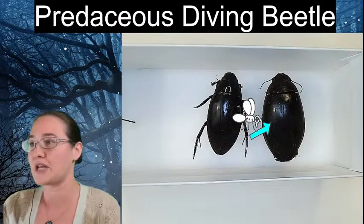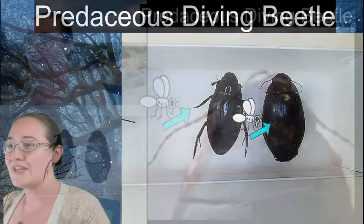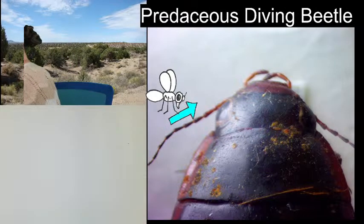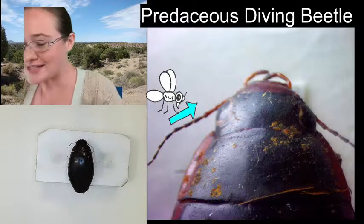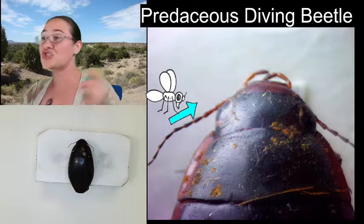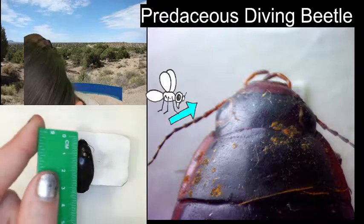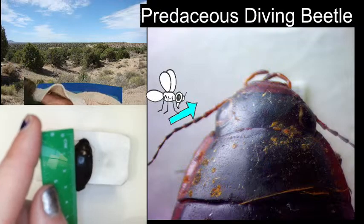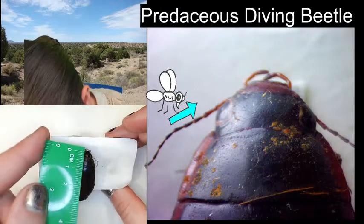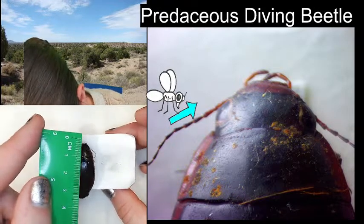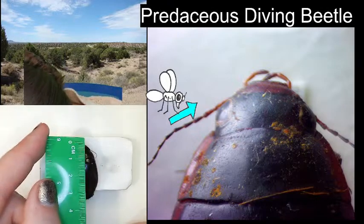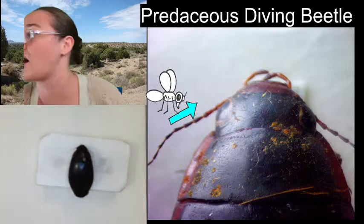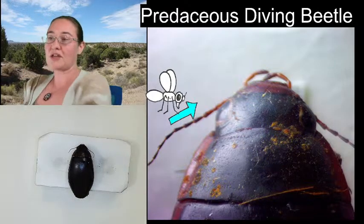I'm going to pull this predacious diving beetle over. Let me flip him over to where he's supposed to be and give you a length. My beetle is just too large to measure under my microscope, so measuring from the front of its head to the back of its elytra — his body is rounded, so it's a little difficult — but it's looking like about 3.8 or 3.9 centimeters long.